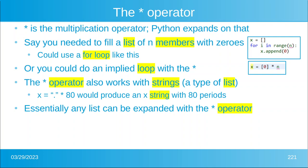Say that you need to fill a list with zeros. Well, you could use a for loop for in range n, x dot append zero and it'll just go over and over until it fills it all with zero. Or you could do an implied loop with the asterisk operator. As you see on this example, x equals the element zero in a set multiplied n times. Now this works with strings, which is another type of list. So if you said x equals the string blah times 80, well you would have blah blah blah 80 times. So you can expand any list with the asterisk operator and it's very useful.